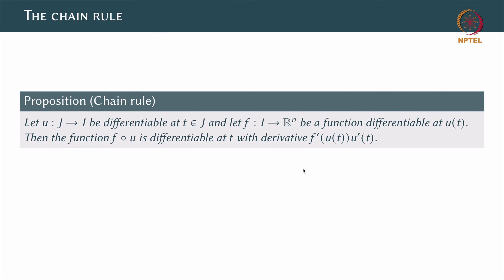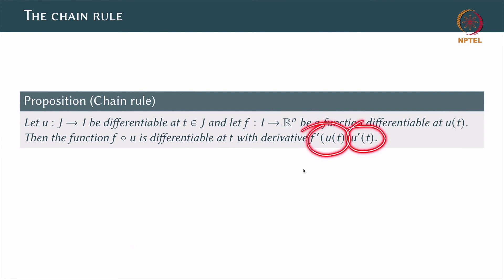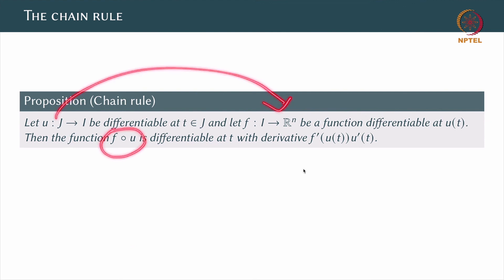We also have a chain rule for such functions. Suppose you start with an interval J, also an interval in R. Suppose u from J to I is differentiable at the point t in J, and you have a function f from I to R^n that is differentiable at the point u of t. Then the composite function f composed with u is differentiable at t, with the derivative f prime of u of t times u prime of t. Note u prime of t is a number and f prime of u of t is a vector, so this is a scalar times a vector, which is a vector — as expected, since f composed with u goes from J to R^n. I am leaving this as an easy exercise.